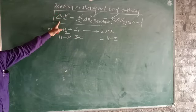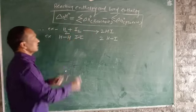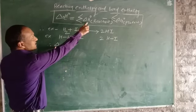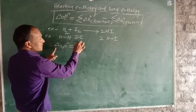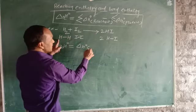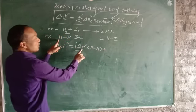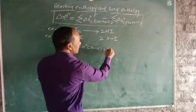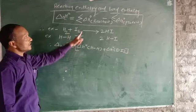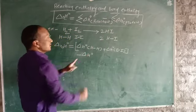For this reaction, the reaction enthalpy ΔrH° = summation of ΔH° of reactant bonds minus summation of ΔH° of product bonds. The reactant bonds are H–H and I–I, so we take ΔH° of H–H plus ΔH° of I–I as the summation of reactants.